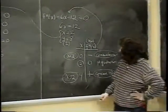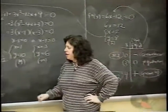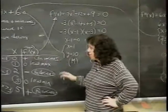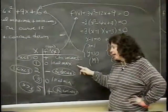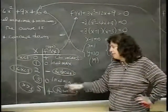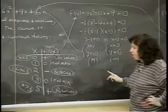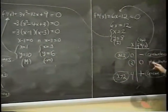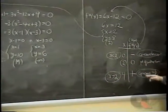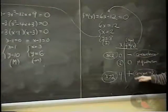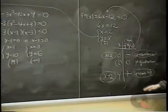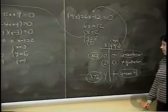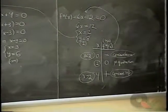The second derivative is negative for x less than 2, so the curve is concave down there. It's positive for x greater than 2, so the curve is concave up. There is a sign change at x equals 2, confirming it is indeed a point of inflection at (2, 8).